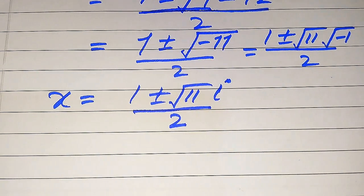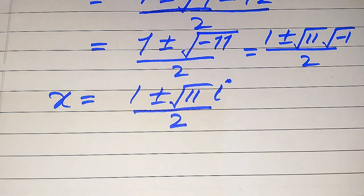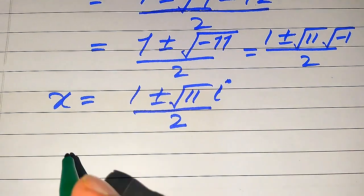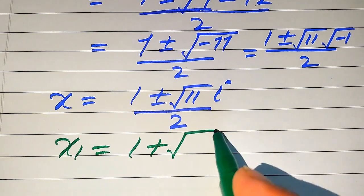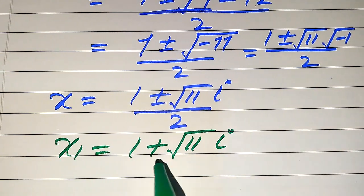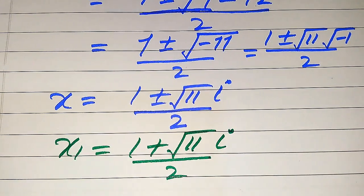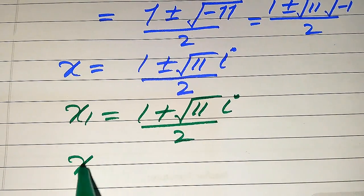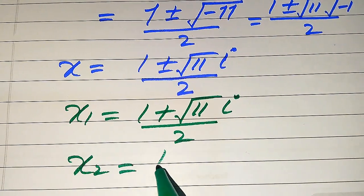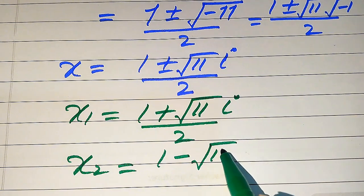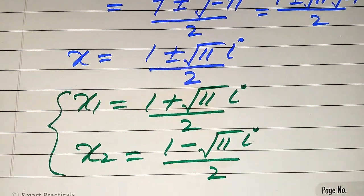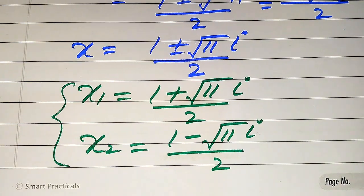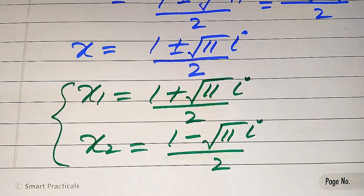We get two complex or imaginary roots of the given equation. Writing both roots separately: x1 equals 1 plus square root of 11 iota, divided by 2, and x2 equals 1 minus square root of 11 iota, divided by 2. These are the two solutions of the given equation, and this is the final answer. Thank you so much for watching.